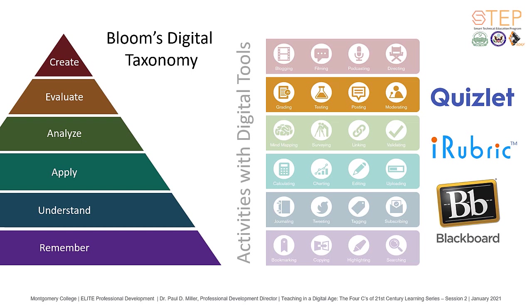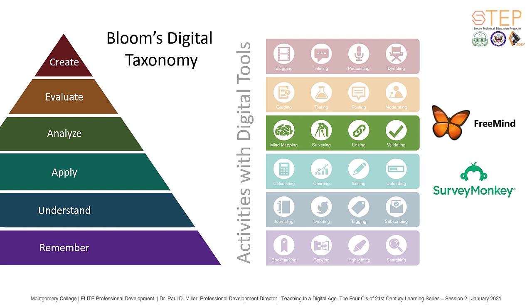Activities that allow for mind mapping, surveying, linking, or validating of ideas allow students to analyze information, make judgments, or explore relationships between materials. Digital tools such as FreeMind, an open source mind mapping software program, allows for knowledge to be captured from one or more students by placing a topic in the center of an empty space and branching out with related ideas. Creating surveys using tools like SurveyMonkey also allow for information to be gathered so that it can be analyzed by the student in relation to a specific topic.